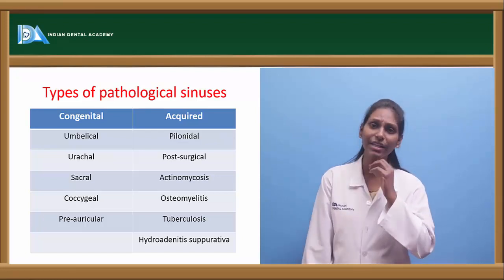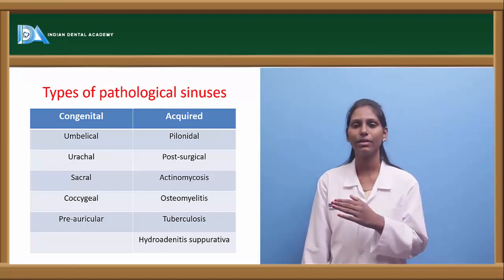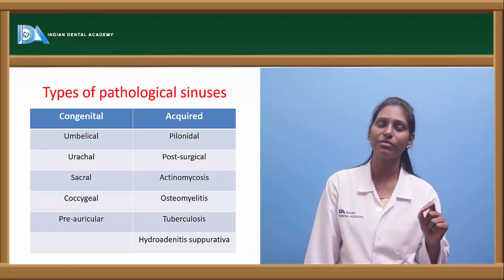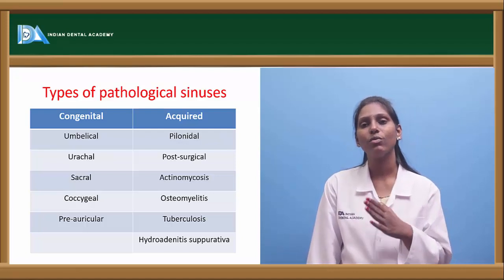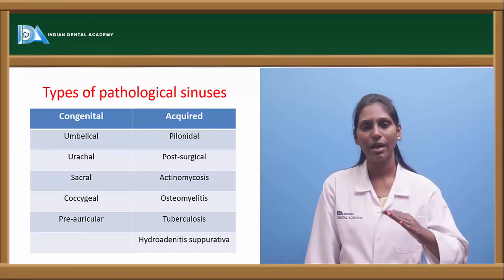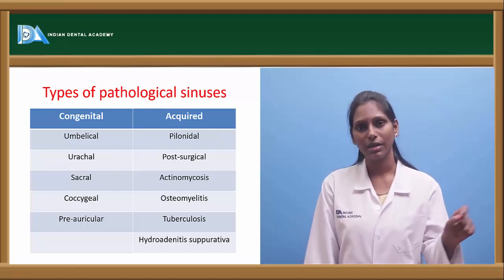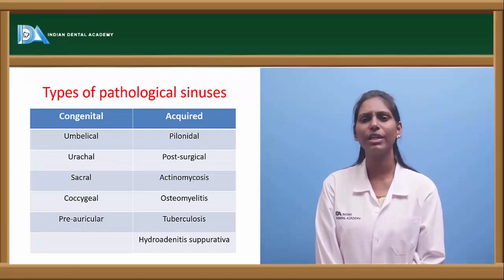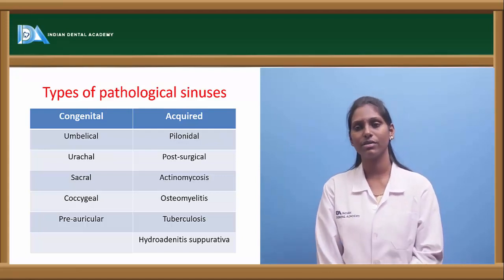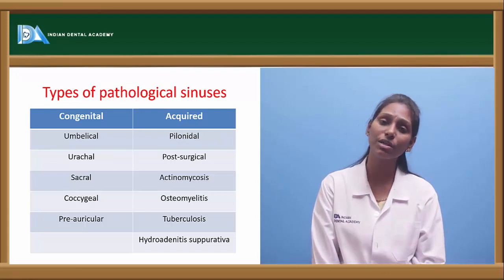Umbilical sinus is a persistent continuation from the umbilical end to the yolk sac, from the fetal midgut to the yolk sac. After birth, this umbilical region has to close — but if a persistent connection remains, it can lead to umbilical sinus. Urachal sinus involves a connection between the urinary bladder and the umbilical region, where a minute amount of urinary discharge can occur, leading to infection and slowing the healing process.